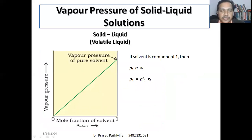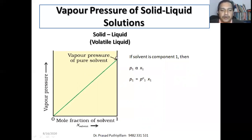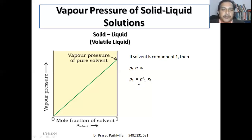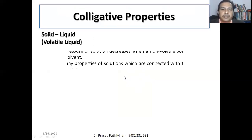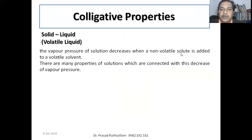If you plot a graph of vapor pressure versus mole fraction of solvent, as the mole fraction X increases from 0 to 1, the vapor pressure of the solution also increases. The green trend line represents this increment. When mole fraction equals 1, there is no solute — it is pure solvent. As per Raoult's Law, P1 is directly proportional to X1, or P1 = P01 × X1, where P01 is the proportionality constant and the vapor pressure of the pure liquid. The vapor pressure of solution decreases when a non-volatile solute is added to a volatile solvent.